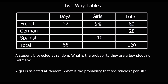We can do the same thing in the totals column: we've got 60 people doing French, 28 doing German, and we don't know how many are doing Spanish, but we know there are 120 people in total. We've got 88 people accounted for, so we add on to 88 to make 120 — or 120 take away 88 — that's 32. So 32 is the missing number there.